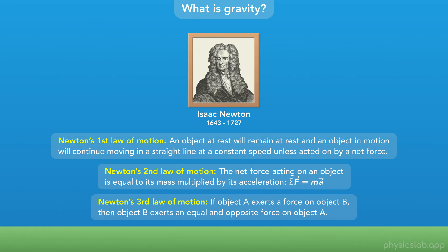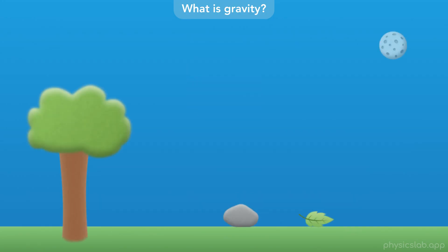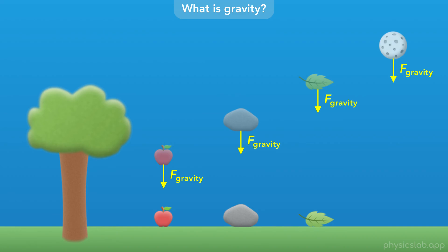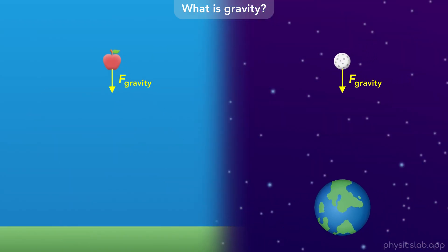That's where Isaac Newton comes in. Around the same time that he was putting together his three laws of motion, he was also wondering what causes objects to fall towards the Earth. As the story goes, he was sitting next to an apple tree when an apple fell to the ground. Newton wondered: why does the apple fall down, and not up or sideways? He thought there must be some force acting on the apple that pulls it towards the Earth, which he referred to as the force of gravity. This force must be pulling every object towards the Earth, no matter how high it is above the ground. And if that was true, then maybe this force applies to every object in the universe, including the Moon.